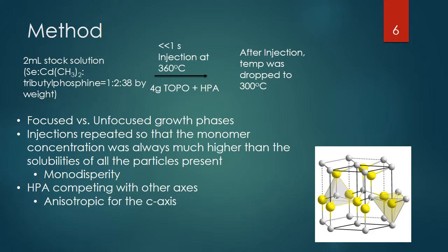The synthesis method basically used two milliliters of a stock solution made up of powdered selenium, dimethyl cadmium, and tributyl phosphine. These three were combined in a ratio of 1 to 2 to 38 by weight. Once this stock solution was made, it was injected into four grams of TOPO and HDA at about 300 degrees Celsius for less than a second.